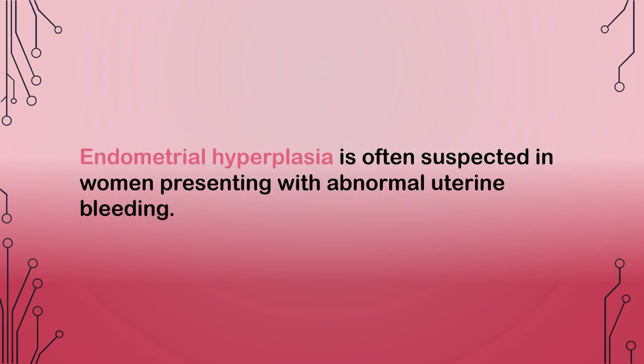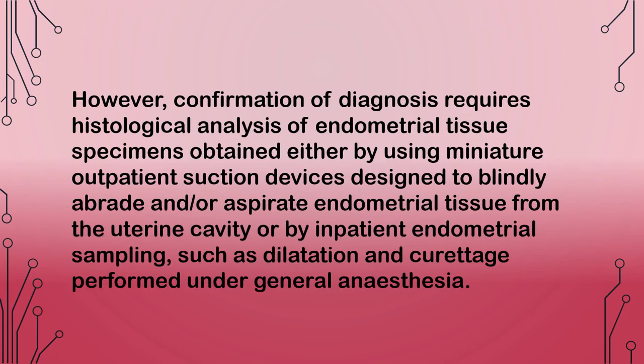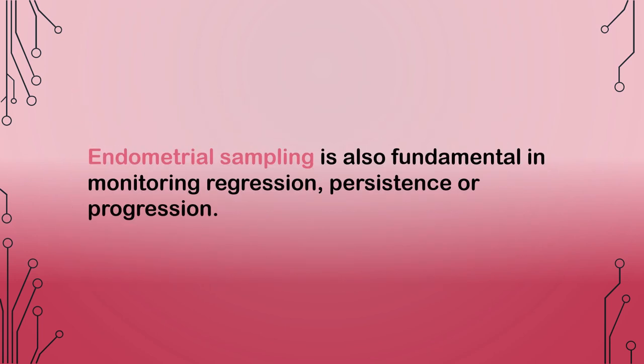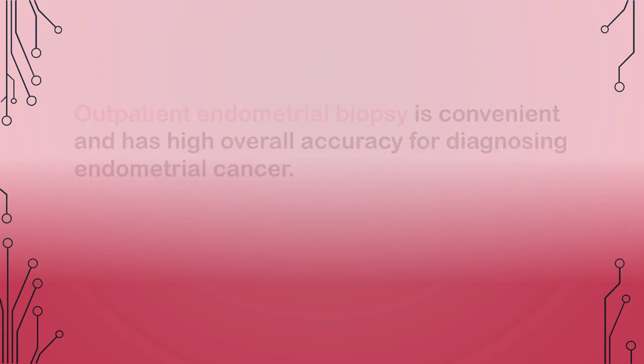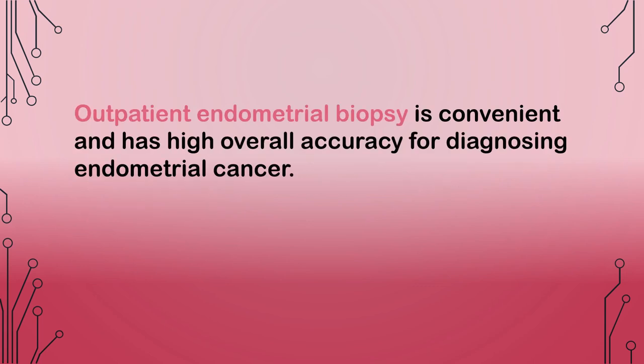Endometrial hyperplasia is often suspected in women presenting with abnormal uterine bleeding. Confirmation of diagnosis requires histological analysis of endometrial tissue specimens obtained either by miniature outpatient suction devices or by inpatient endometrial sampling such as dilatation and curettage performed under general anesthesia. Endometrial sampling is also fundamental in monitoring regression, persistence, or progression. Outpatient endometrial biopsy is convenient and has high overall accuracy for diagnosing endometrial cancer.